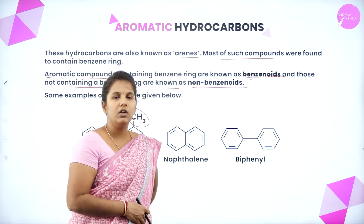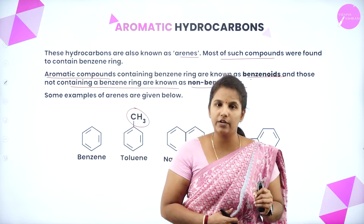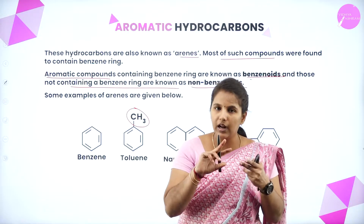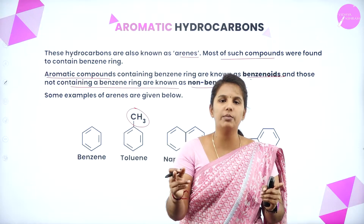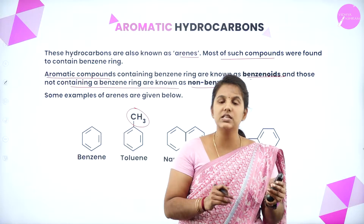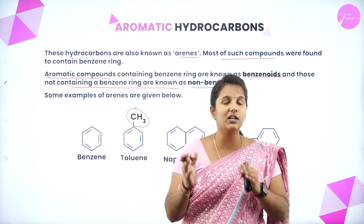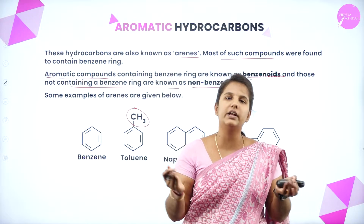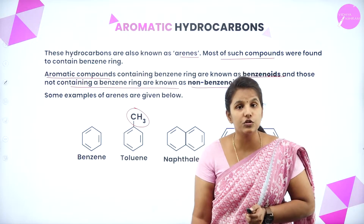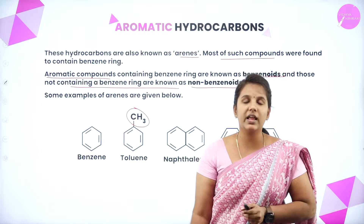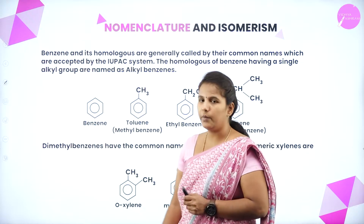This is how we understand aromatic hydrocarbons. There are two types: benzenoid, which contains a benzene ring, and non-benzenoid, which does not. Generally, aromatic hydrocarbons are also known as arenes and they give a pleasant odour. Now let us move on to nomenclature.